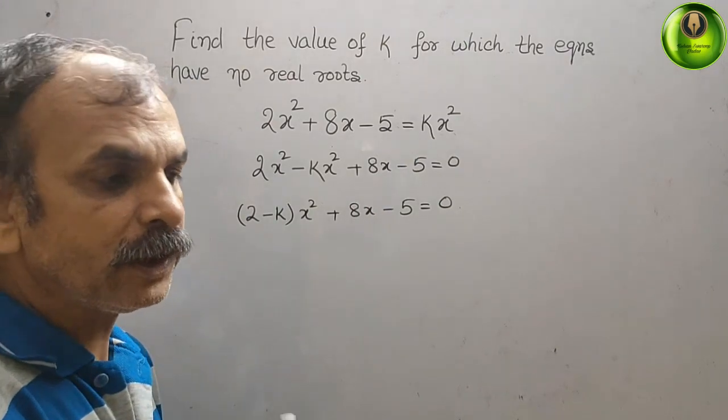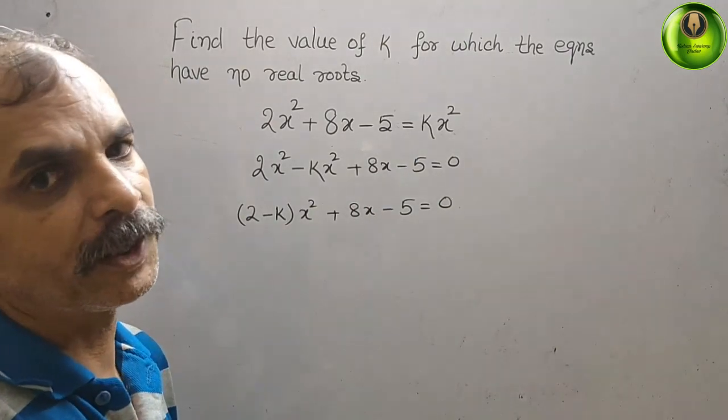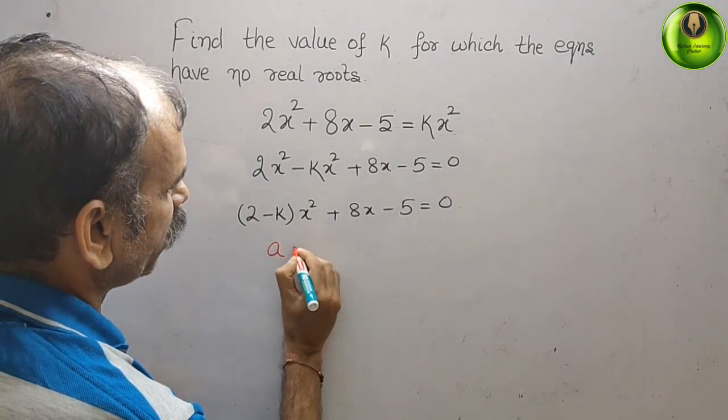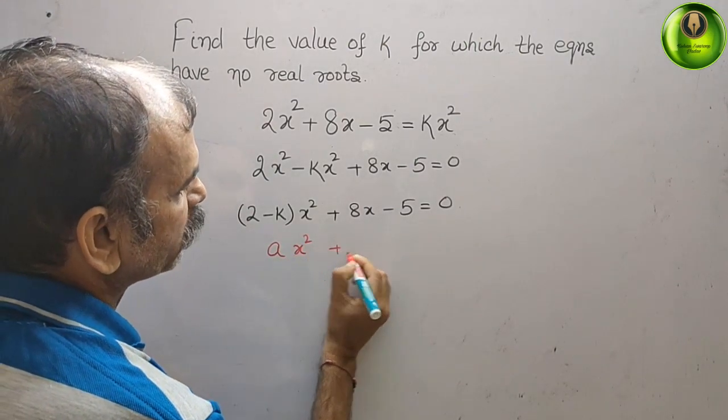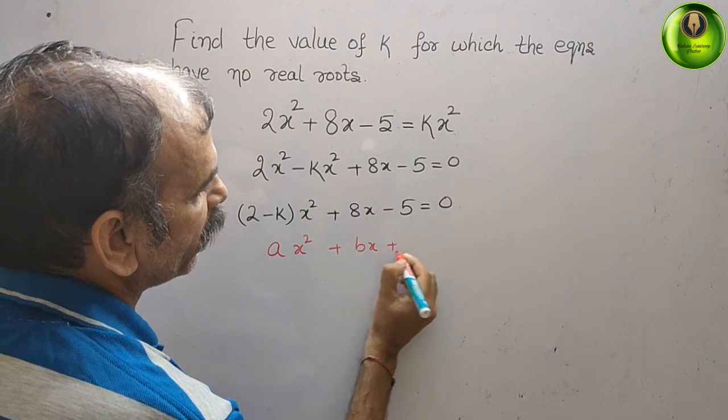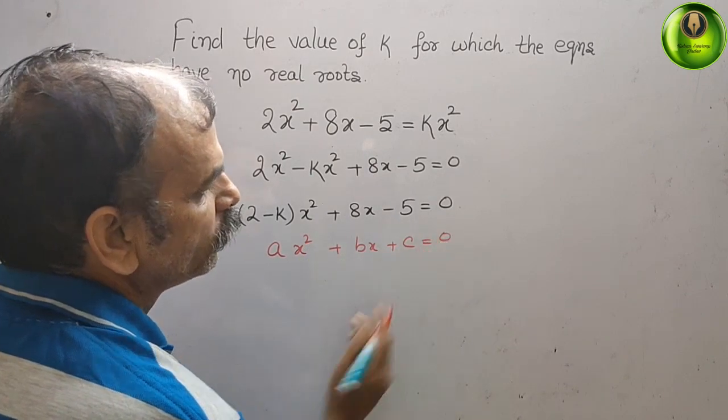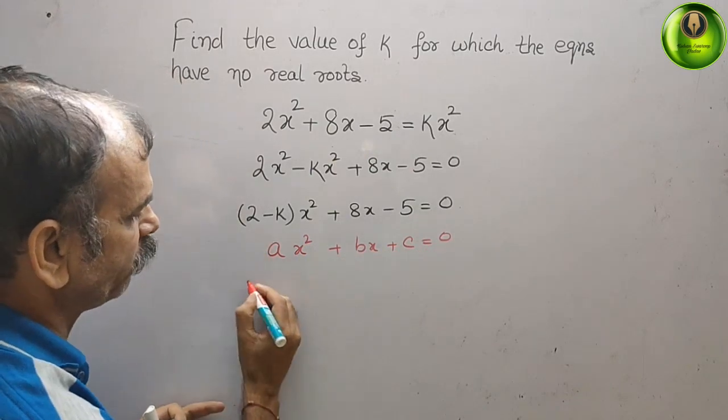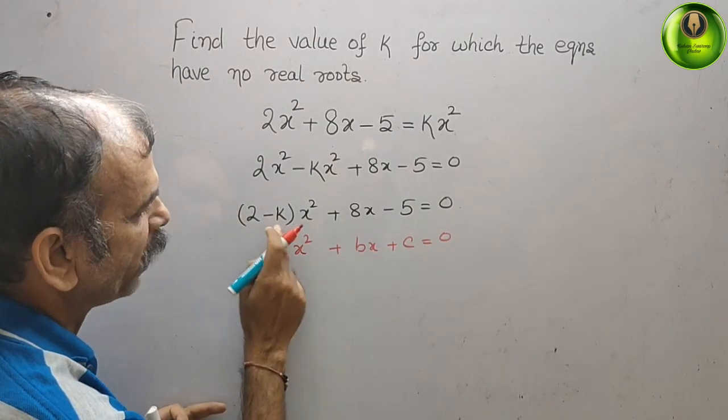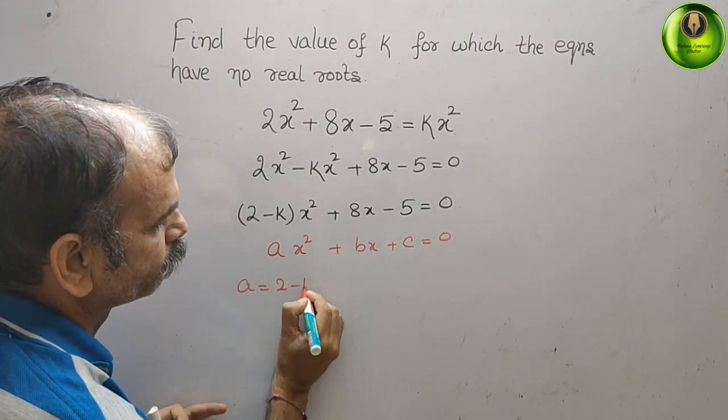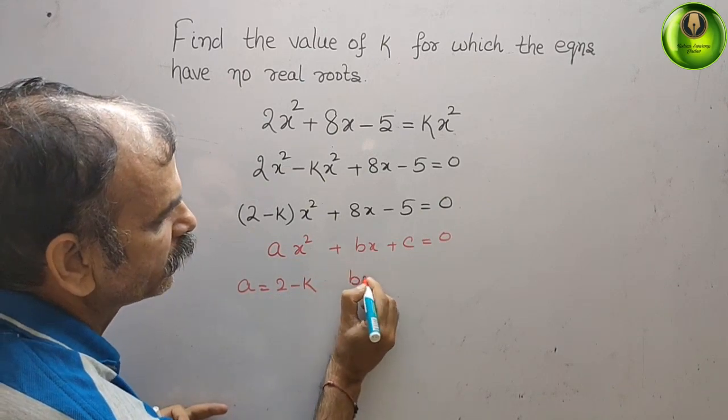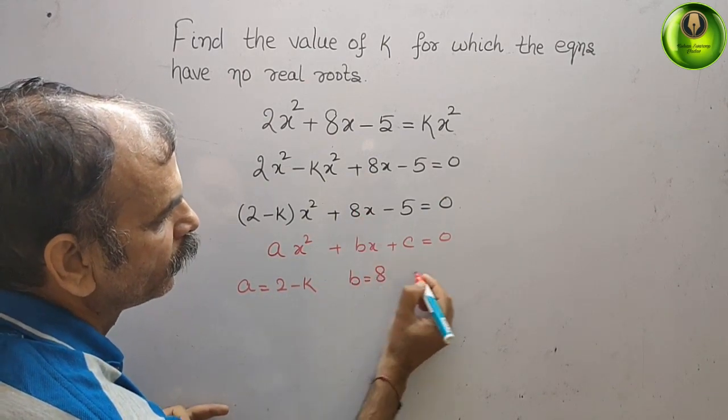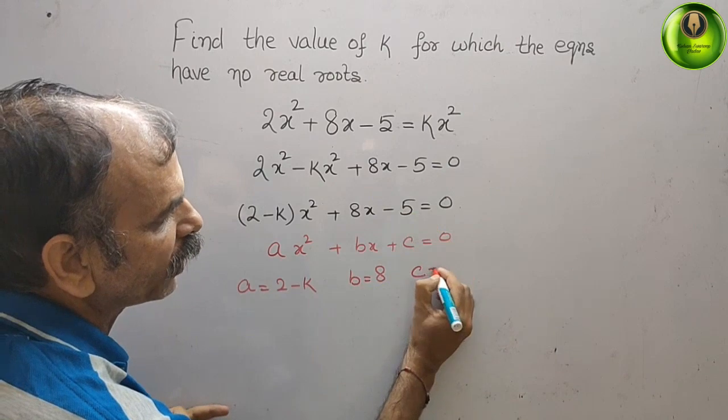Now what we will do, just we will write the standard form of quadratic equation. That is your ax square plus bx plus c that gives you 0. Now compare the coefficients, we will get a is equal to 2 minus k, b is 8, and c is minus 5.